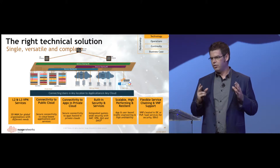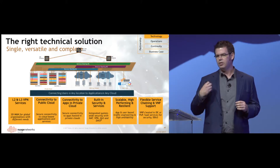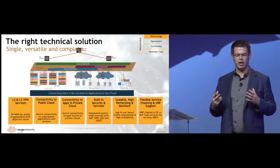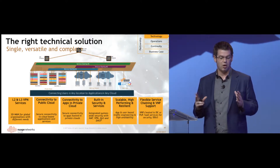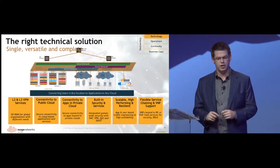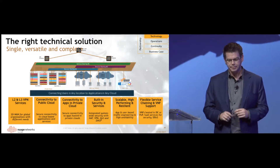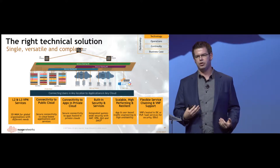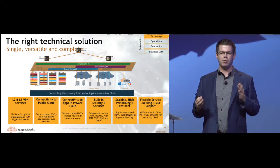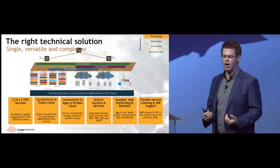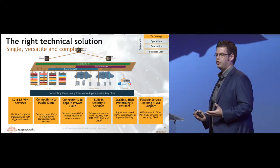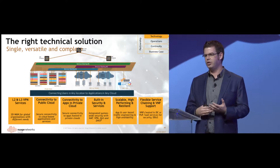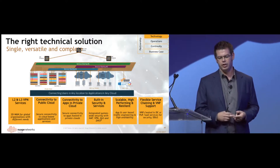We need to make sure that we have the resiliency, the scale-out, the multi-tenancy functionality to do that across a carrier's network and all of their enterprise tenants. Going beyond that connectivity and beyond those built-in services, how do we mix and bring in a multi-vendor best-of-breed environment where we can support service chaining to different functions, whether they're on-premises, in the POP, in the data center, or in the cloud?